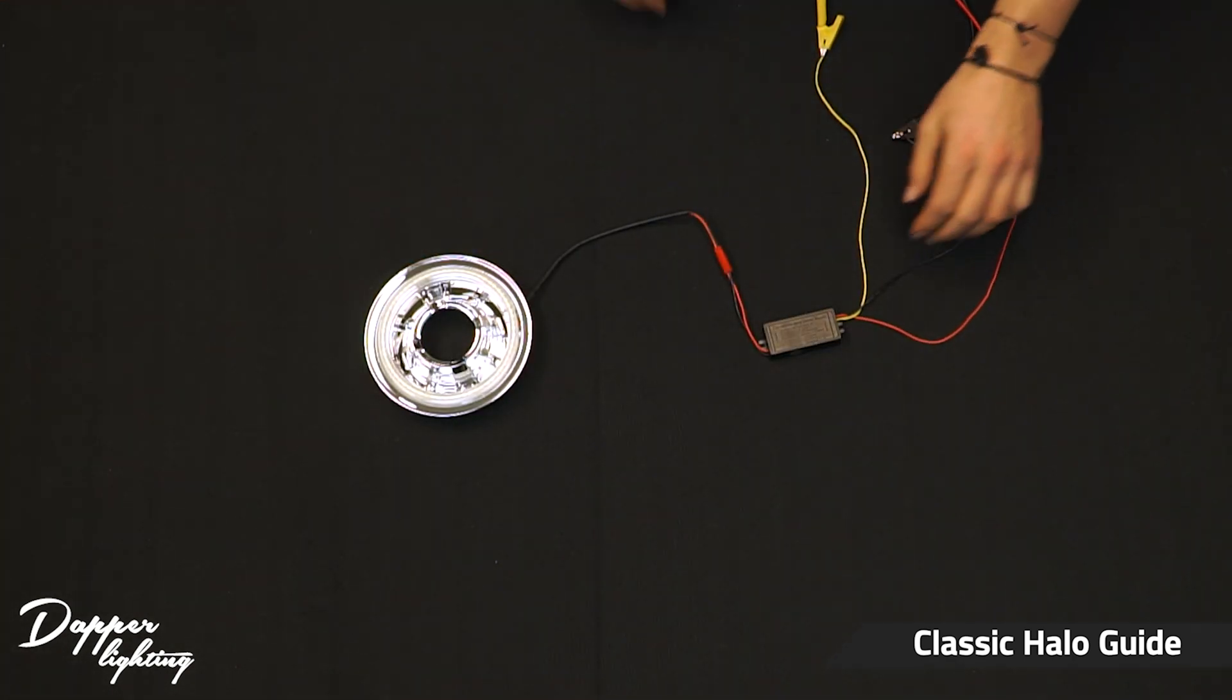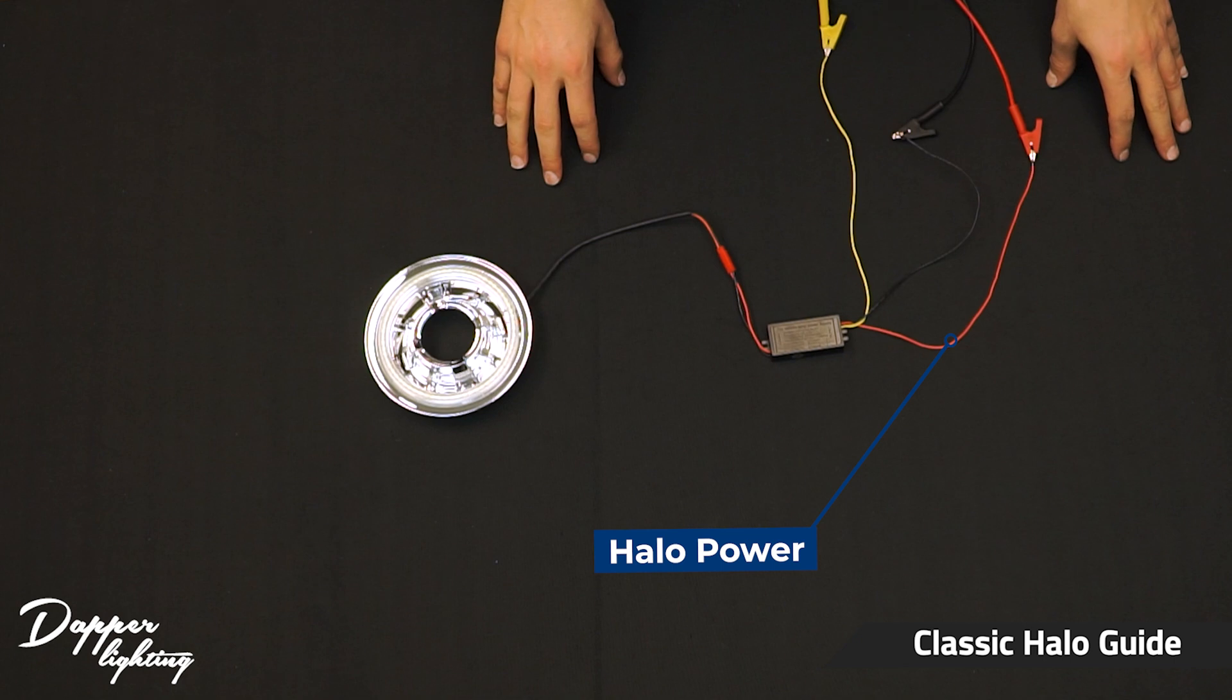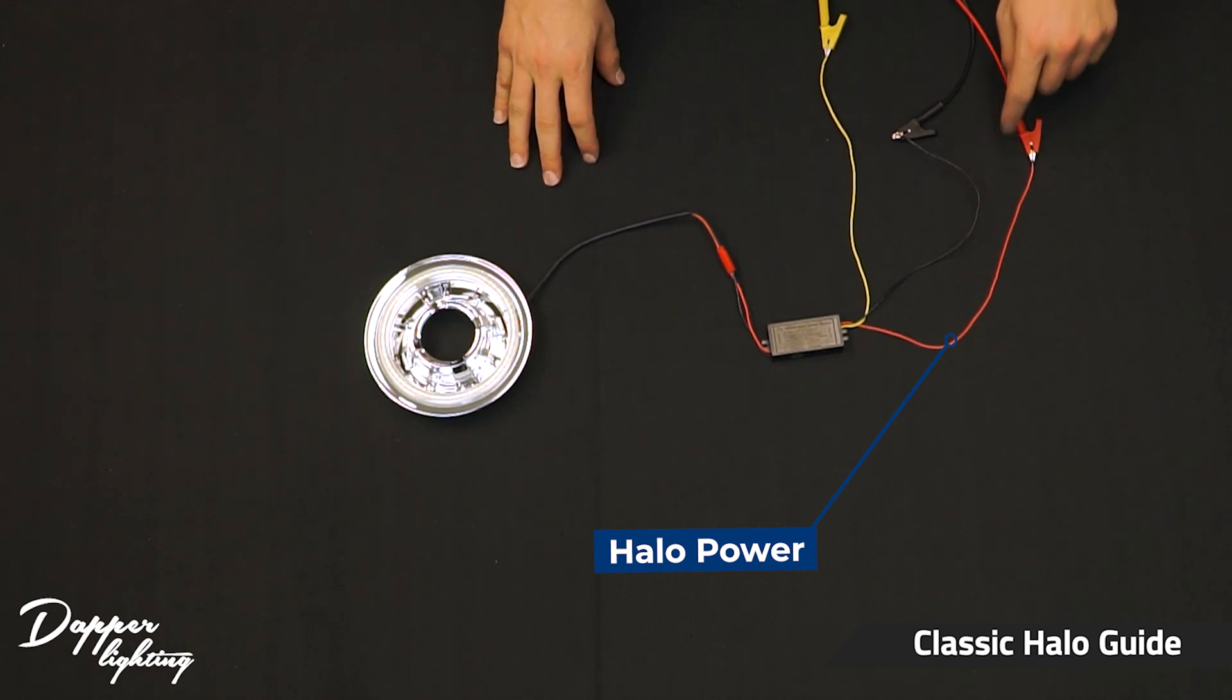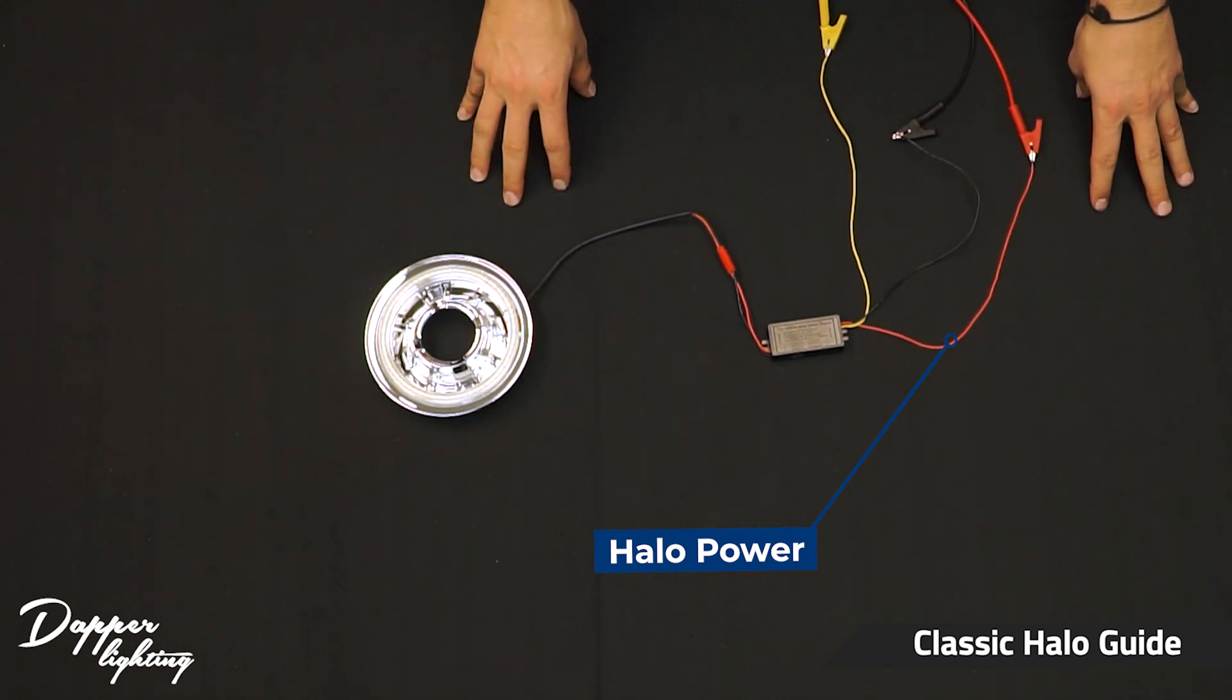We now have everything wired up, so the red wire is going to be the power for the white halo. You're going to want that to be tapped into your parking lights or daytime running lights, or possibly an ignition wire so the halos come on when you turn on the ignition switch.